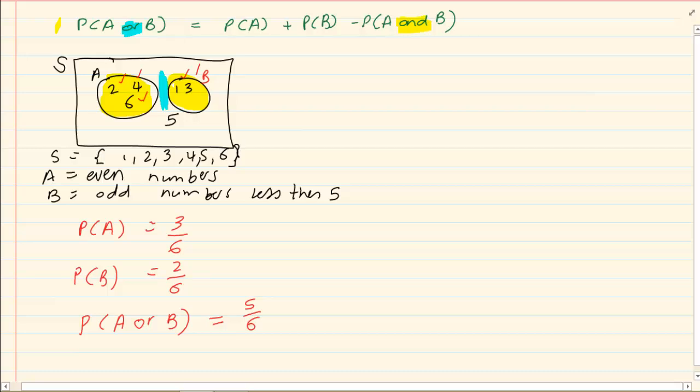Now when we are working with mutually exclusive, the giveaway is that P of A and B is actually equal to 0.